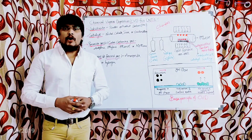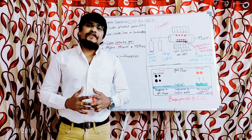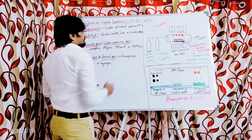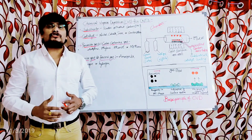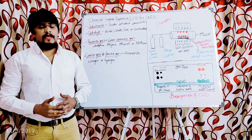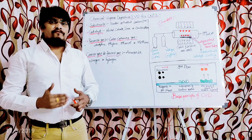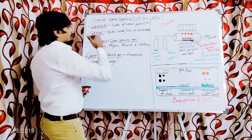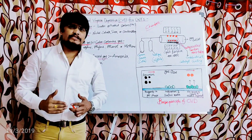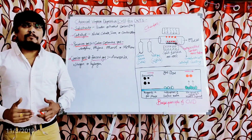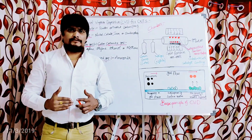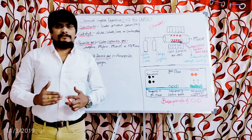Hi students. Today, as part of the preparation of nanomaterials, I am going to explain you about the chemical vapor deposition method. This chemical vapor deposition method is most popularly called as the CVD process for the preparation of nanomaterials. Specifically, I am going to explain the CVD method for the preparation of carbon nanotubes.